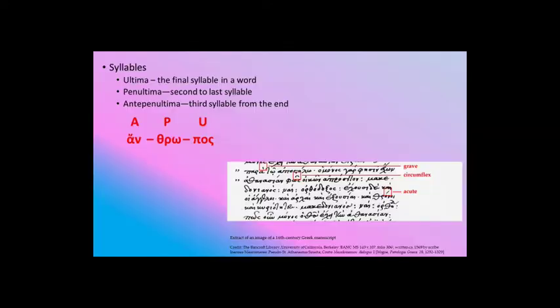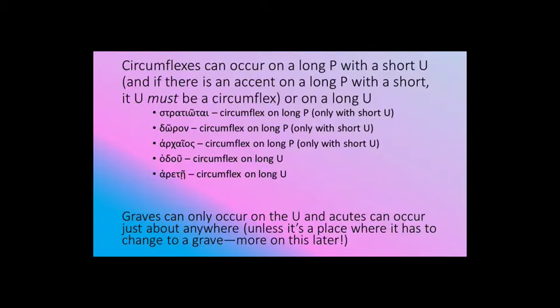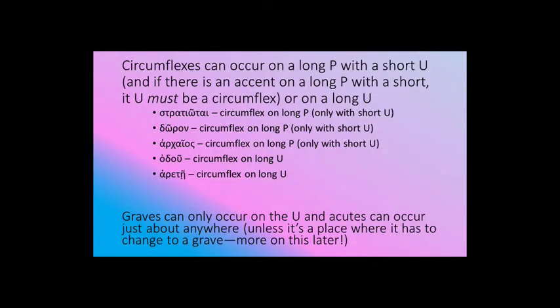Down here we have a 16th century manuscript with the accents marked in as well. So let's start with our circumflex. Circumflexes can only occur on a long syllable, because since this is a pitch accent originally, the voice needed to have time to sort of raise and lower. It needs the length provided by a long syllable for that raising and lowering. One circumstance is if we have a long penultima with a short ultima — if the accent is on the penultima in that situation, the only kind of accent we can have is a circumflex. We cannot have an acute there.